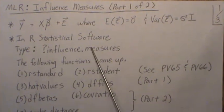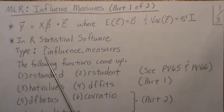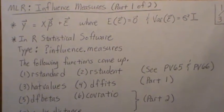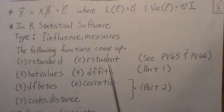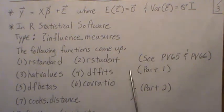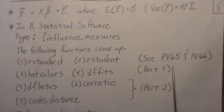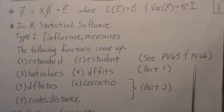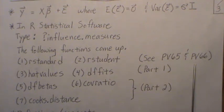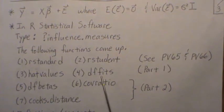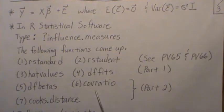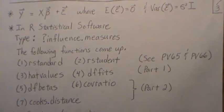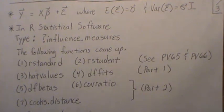If you go into R's statistical software and type '?influence.measures', the following functions come up: rstandard, rstudent — these deal with outliers and were covered in previous videos 65 and 66 in this playlist (General Linear Models Regression) — and hat values and DFFITS, which we'll cover in part one, and DFBetas, covariance ratio, and Cook's distance, covered in part two. All seven functions are in base R and help you find influential points and outliers.